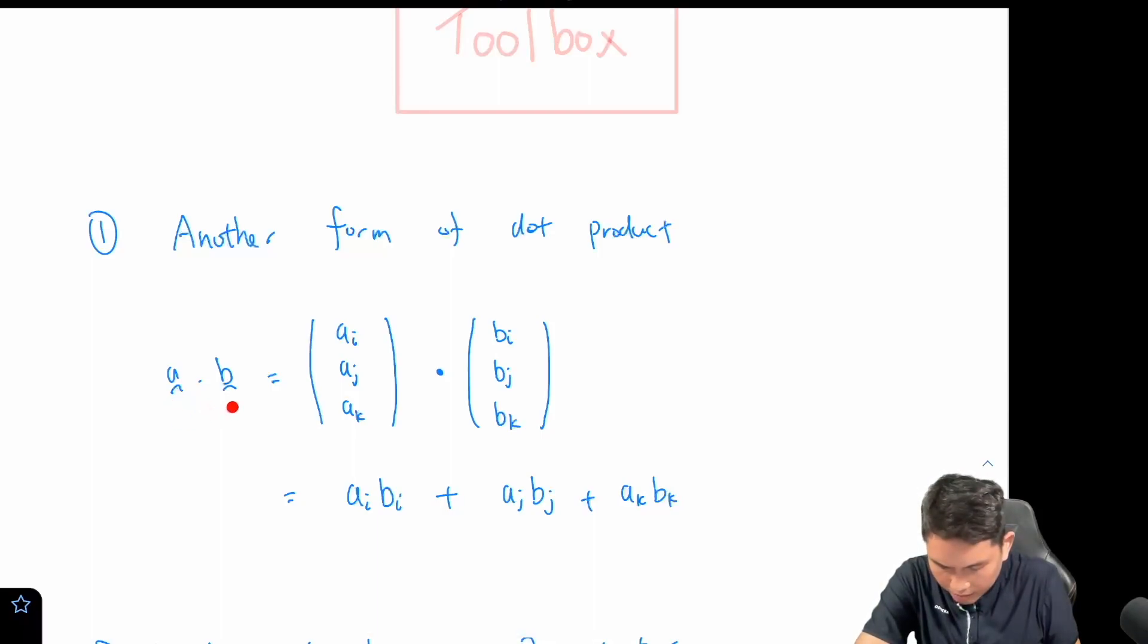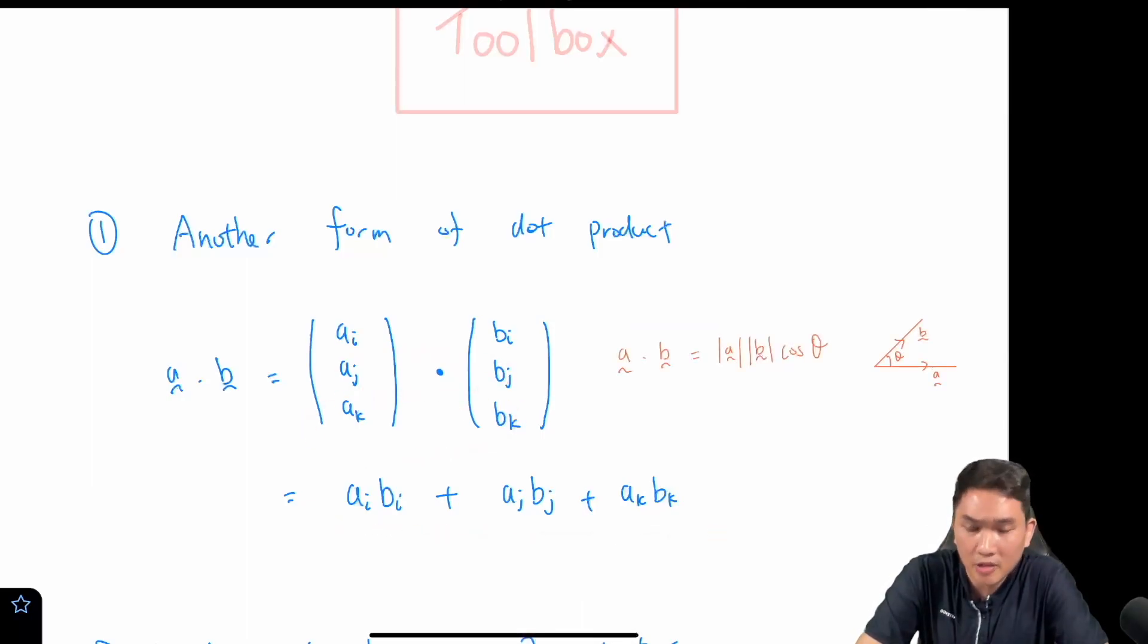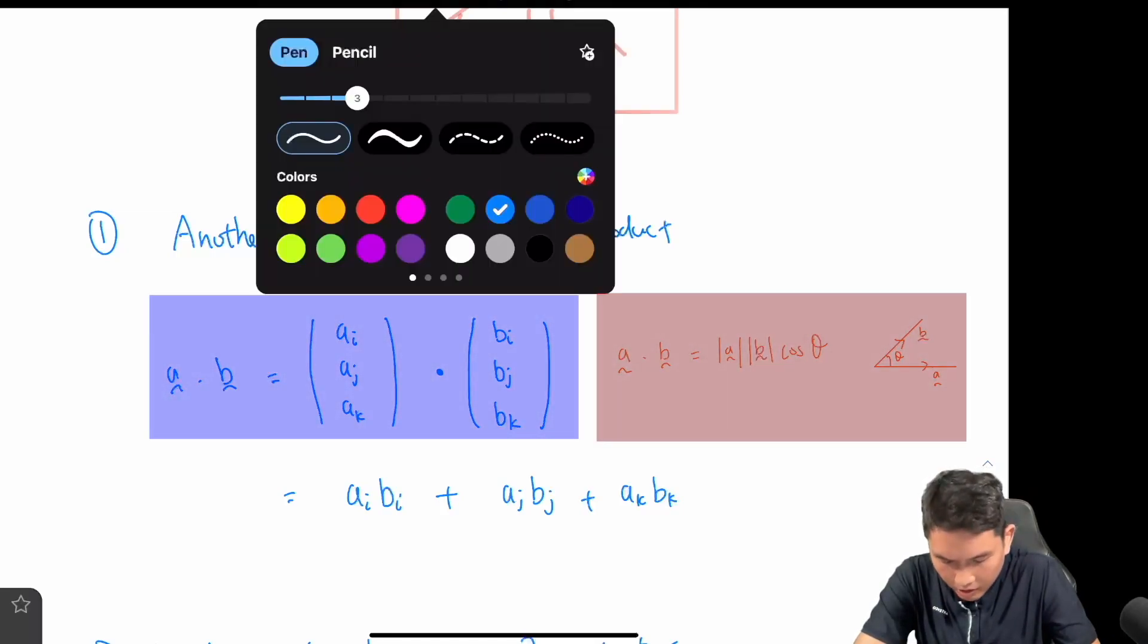If you have a dot b where you have the column vector of a dot with the column vector of b, what you then do is you take the product of the i elements, the j elements, the k elements and you sum them together.